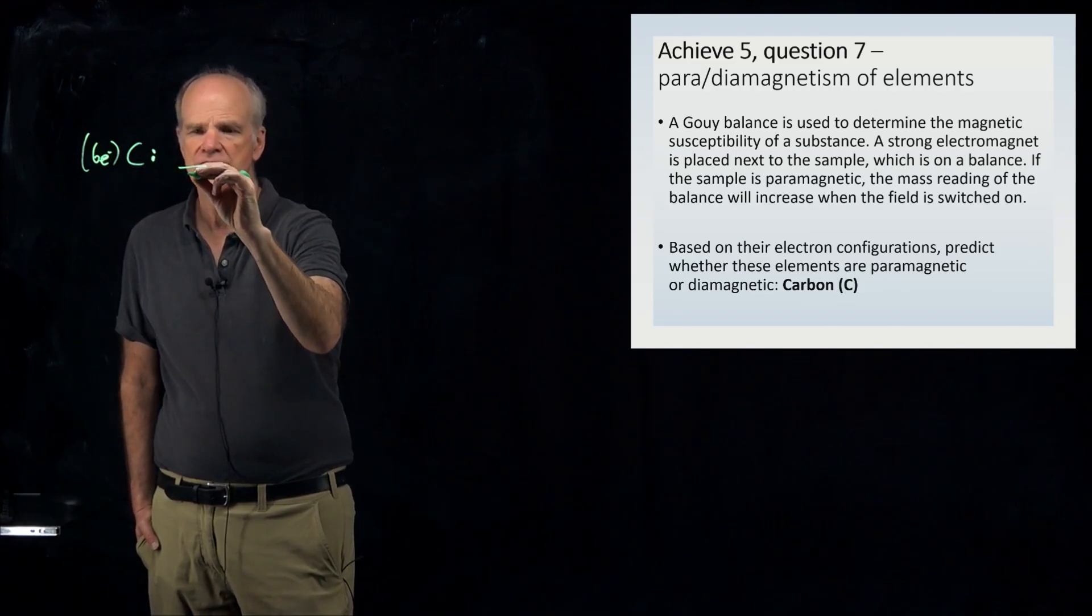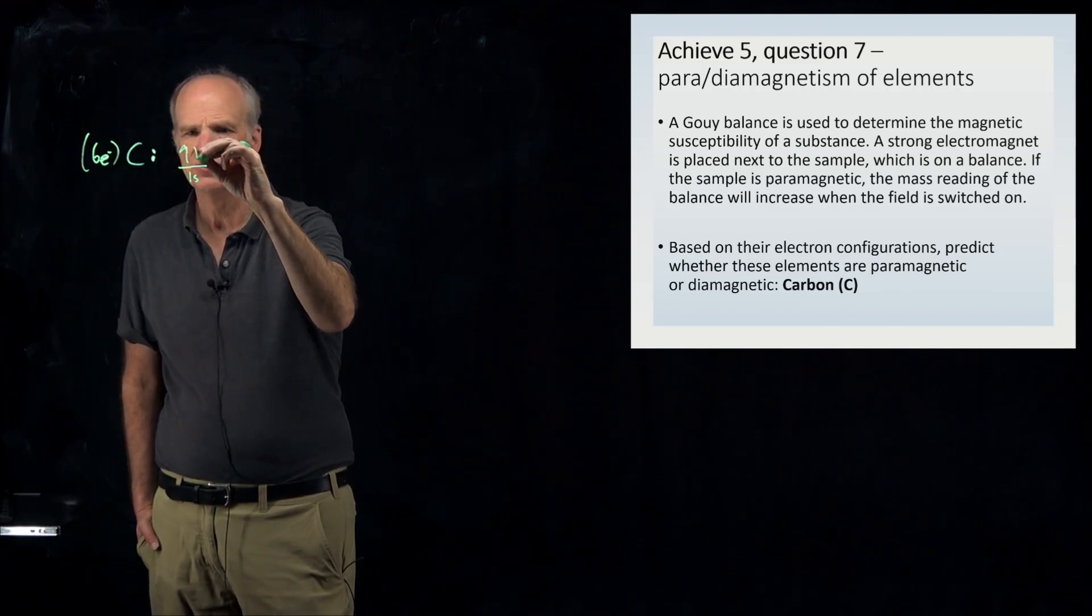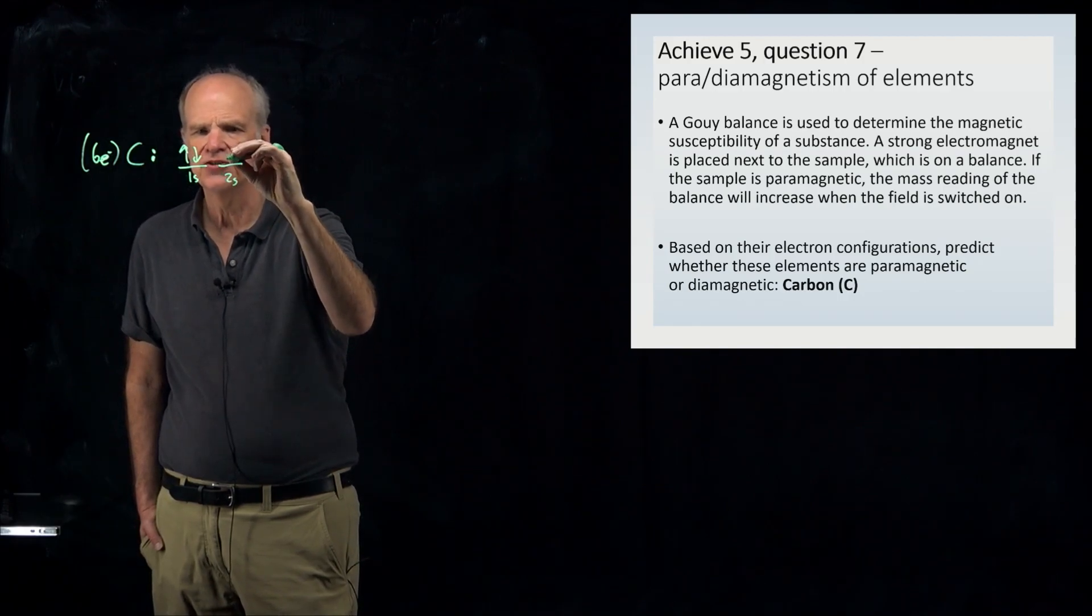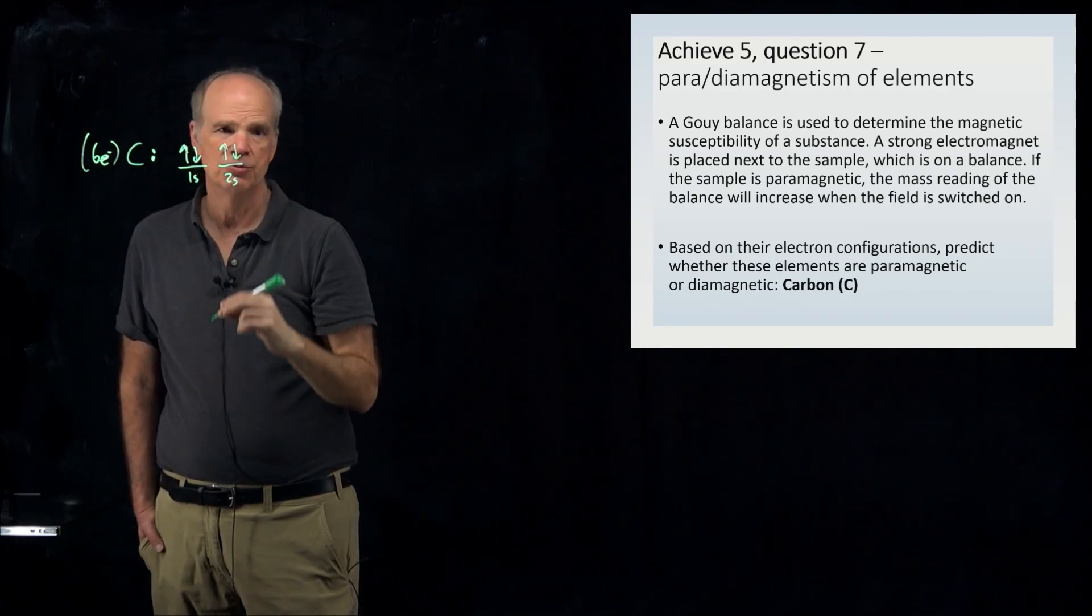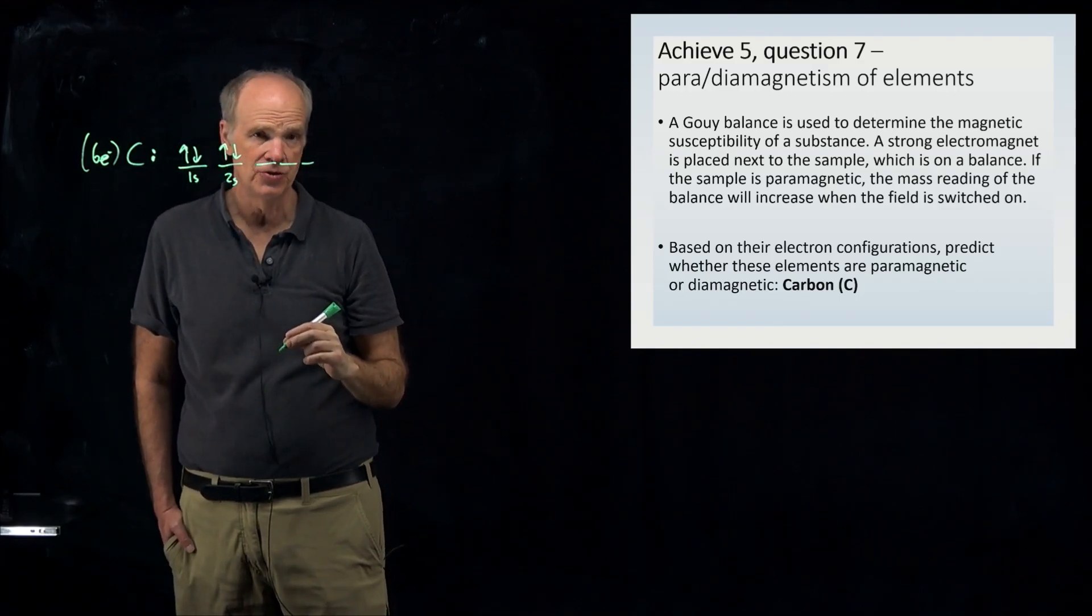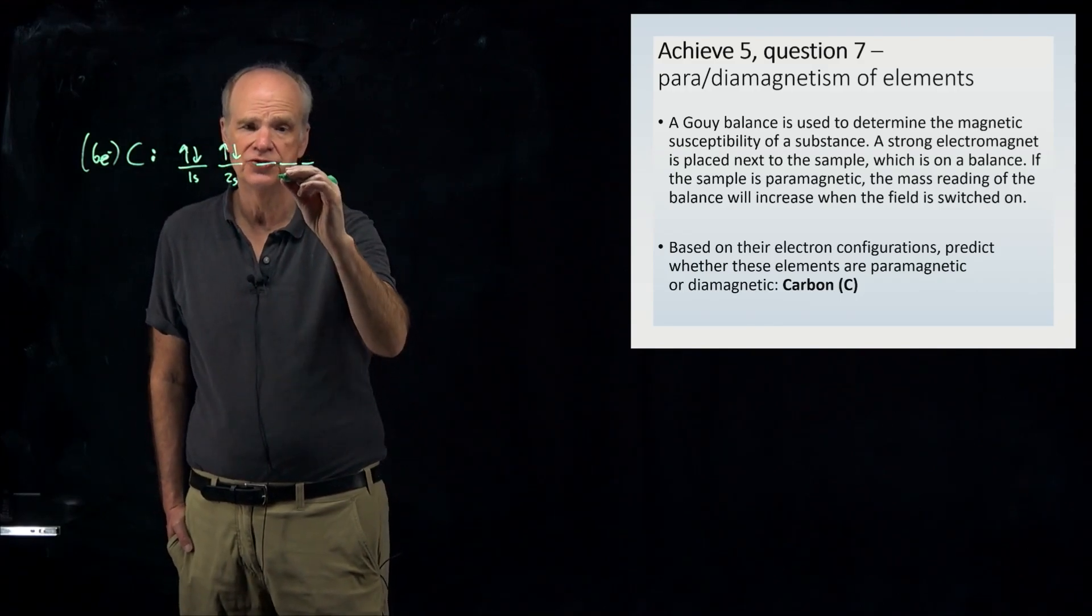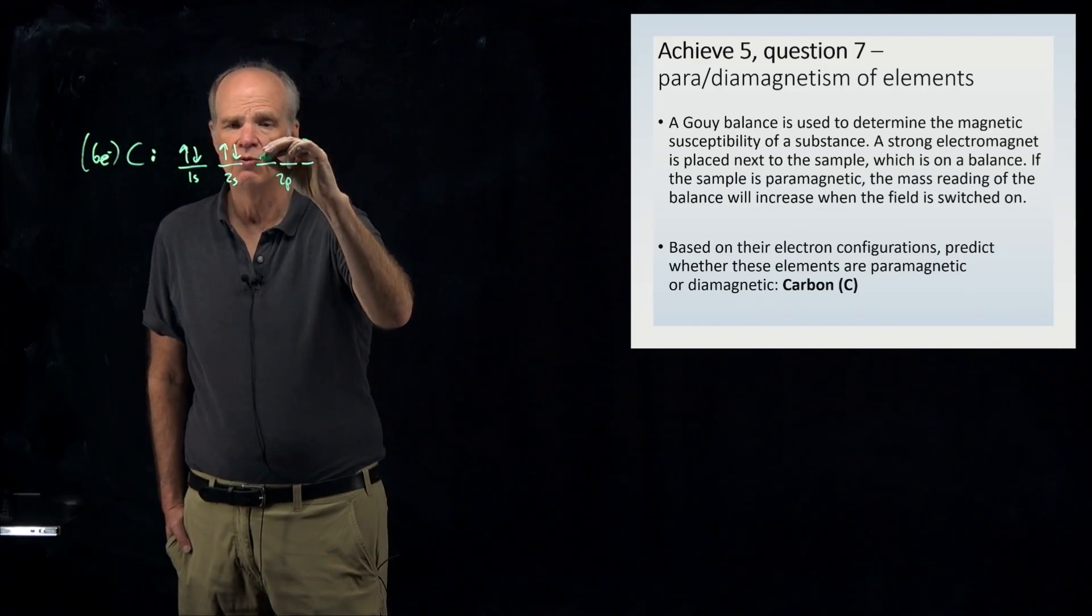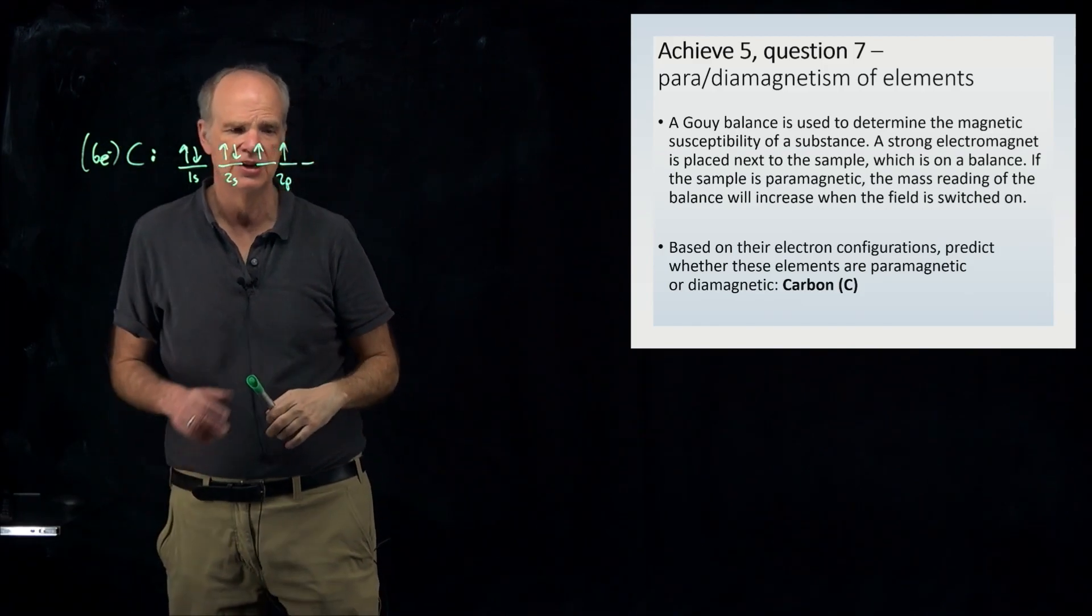So the first pair of electrons go into 1s. The next pair of electrons go into 2s. And then we have two more electrons. And so you know the next orbitals that are filled by electrons are 2p orbitals. And so we have one electron in one orbital and one electron in another.